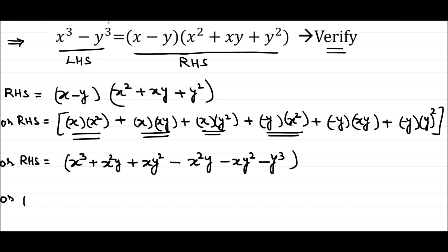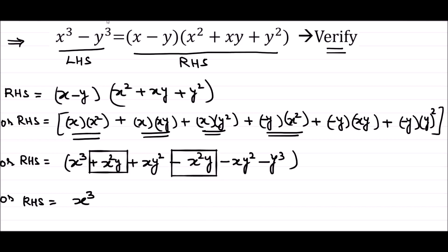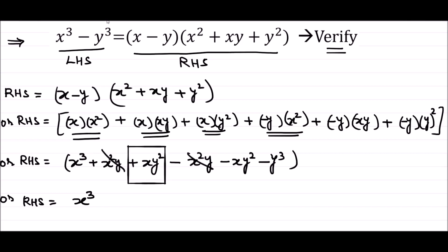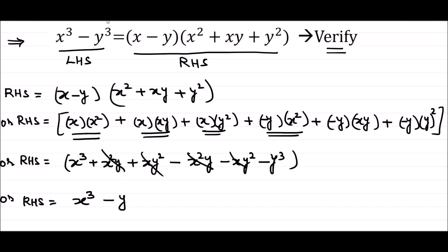So the right hand side is equal to x cube, then plus x square y and minus x square y — these two cancel out. Similarly, plus x y square and minus x y square — these two also cancel out. We are left with x cube minus y cube.